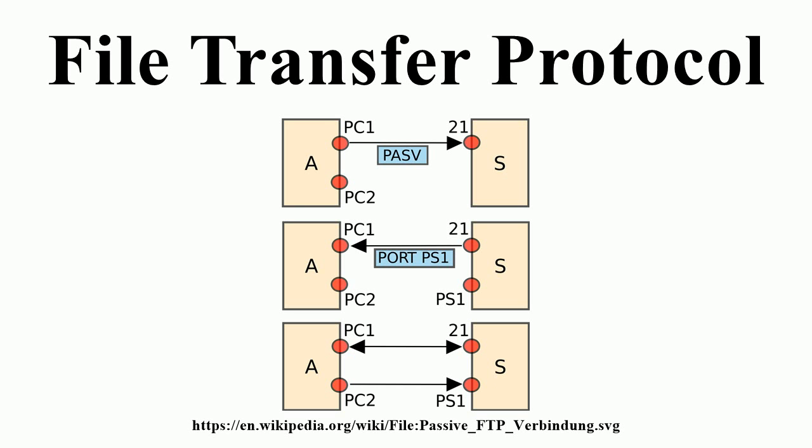HTTP essentially fixes the bugs in FTP that made it inconvenient to use for many small ephemeral transfers, as are typical in web pages. FTP has a stateful control connection which maintains a current working directory and other flags, and each transfer requires a secondary connection through which the data are transferred. In passive mode this secondary connection is from client to server, whereas in the default active mode this connection is from server to client. This apparent role reversal in active mode and random port numbers for all transfers is why firewalls and NAT gateways have such a hard time with FTP. HTTP is stateless and multiplexes control and data over a single connection from client to server on well-known port numbers, which trivially passes through NAT gateways and is simple for firewalls to manage.